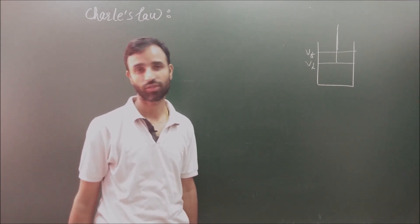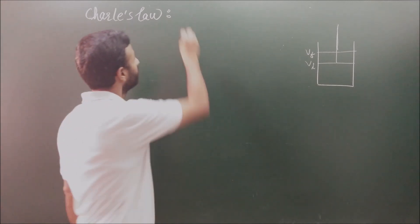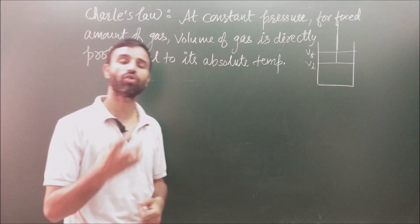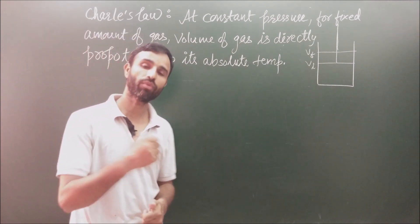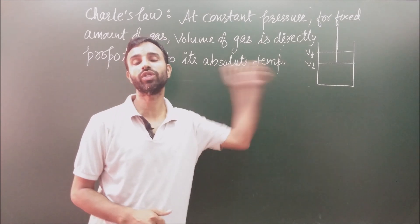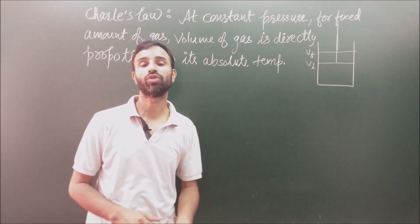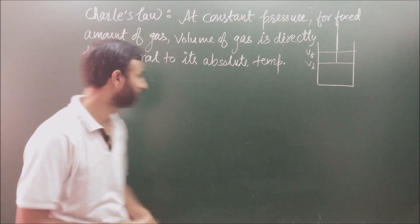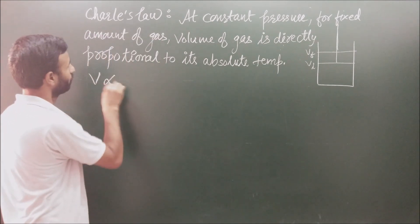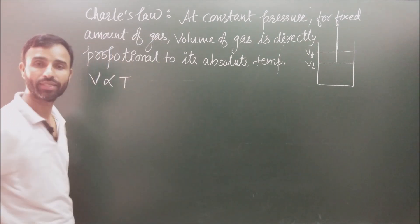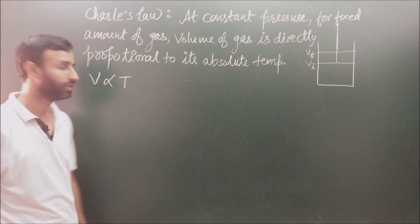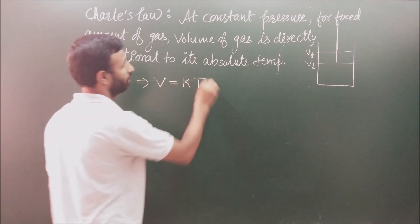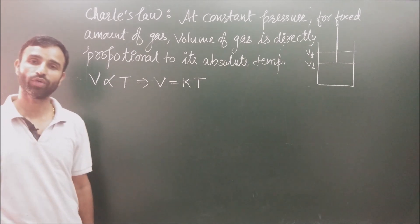This is called Charles' Law. That means according to Charles' Law, at constant pressure for a fixed amount of gas, volume of the gas is directly proportional to absolute temperature, or temperature in Kelvin. That means volume is proportional to T, which implies volume is equal to K into T.